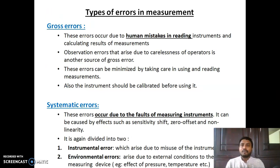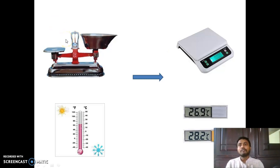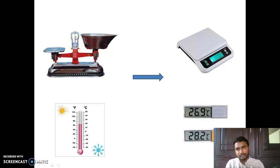The first one we are going to see is gross error. Gross error is the error that occurs due to human mistake in reading an instrument and calculating results of measurement. Taking the same example of measuring one kilogram of sugar, the needle should be at the exact middle point corresponding to the tip — then we say it is one kilogram.